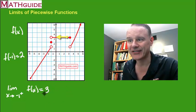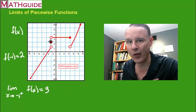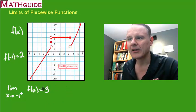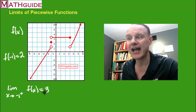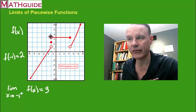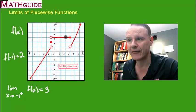There are two different answers. When you evaluate the function, you want to know where the point is. When you do a limit, you want to know where you're headed. I was headed towards a y value of 3 — all these points have a y value of 3.